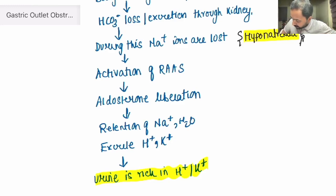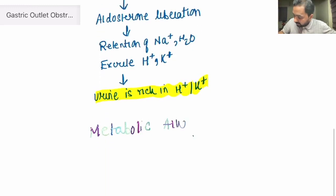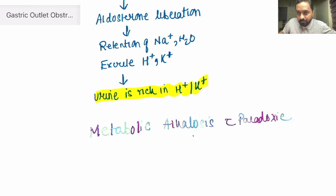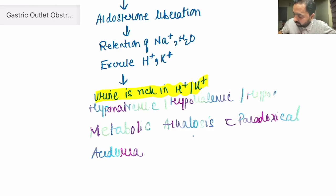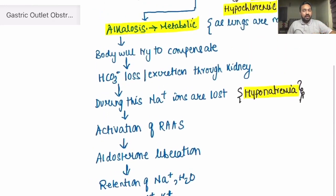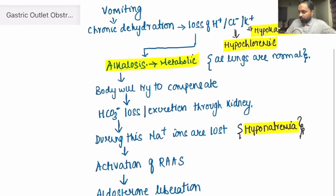Paradoxically, the urine is rich in potassium and hydrogen ions. So the final metabolic abnormality is metabolic alkalosis with paradoxical aciduria. And to that you can add hyponatremia, hypokalemia, and hypochloremia.